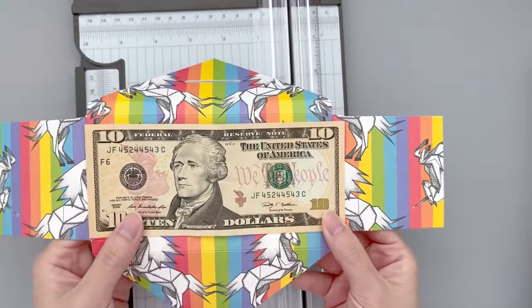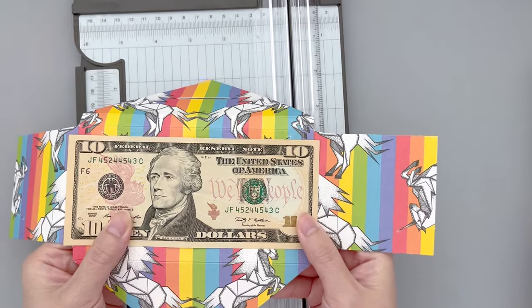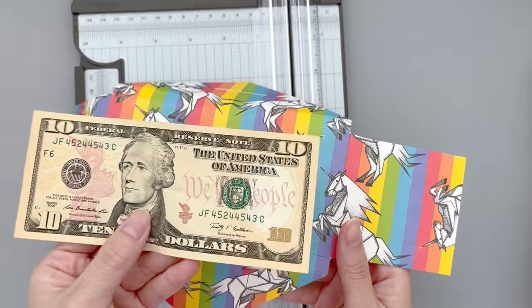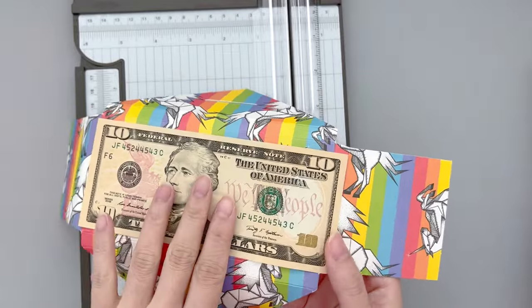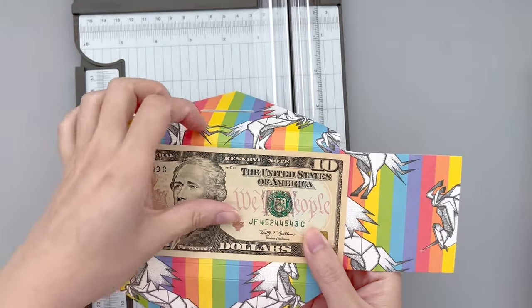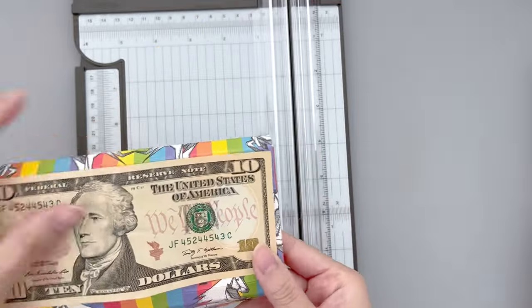Now before you trim it, you just want to make sure that it actually is roughly the size of the paper bill that you will be using. Here I'm using this $10 bill as a reference and you can see how perfectly the size is. If you are using a different kind of bill, you can just trim it off a little bit on whichever side you need.